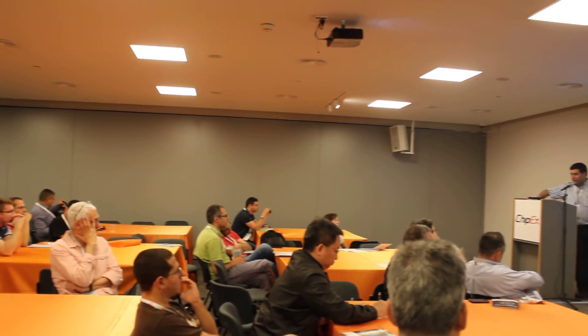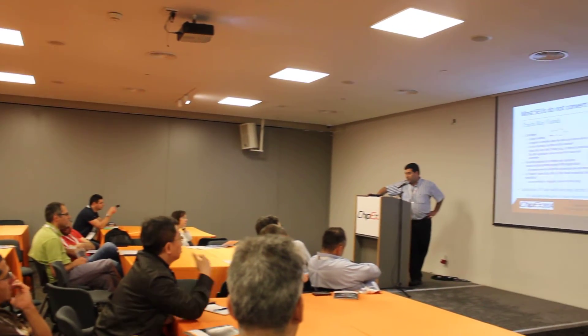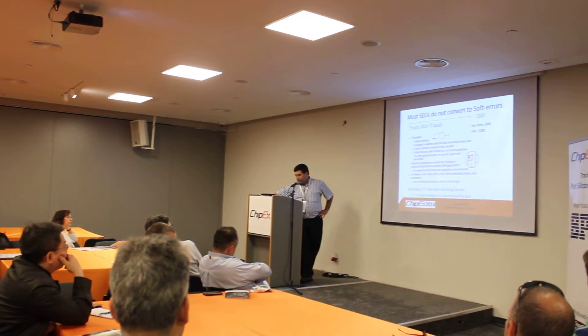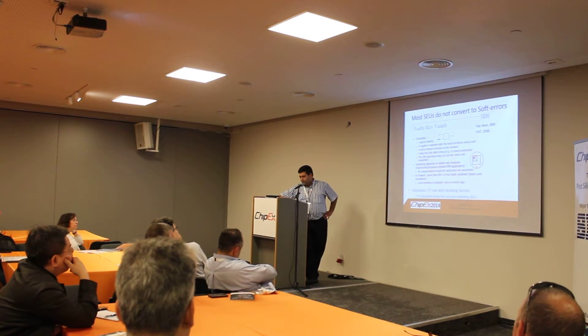When we apply derating factors, we say for each flop: what is the probability that this flop will actually cause an error? When we sum the FIT rate of each flop, we lower it by that flop's derating factor — the probability of that flop causing a soft error.